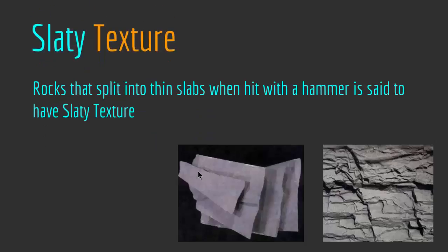The first is slaty texture. This texture is caused by the parallel orientation of microscopic grains — a pervasive parallel foliation, which means layering of fine-grained platy minerals, sometimes chlorite, in a direction perpendicular to the direction of maximum stress, producing rocks with slaty texture. Slaty texture rocks split into thin slabs when hit with a hammer. This rock, if you hit it, will break into sheet-like pieces. The rock with this texture is called slate, characterized by a tendency to separate along parallel planes — a property known as slaty cleavage.